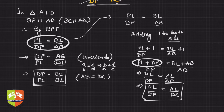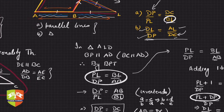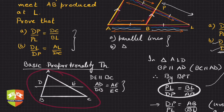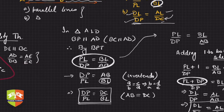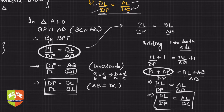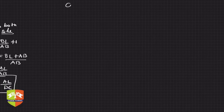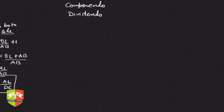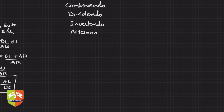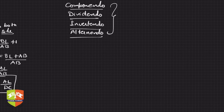So both results are done. The key learning: the underlying concept is the Basic Proportionality Theorem. You also need to observe patterns in ratios and be ready to work with ratios. You must also know ratio operations: componendo, dividendo, invertendo, and alternendo. We will discuss these in separate sessions.